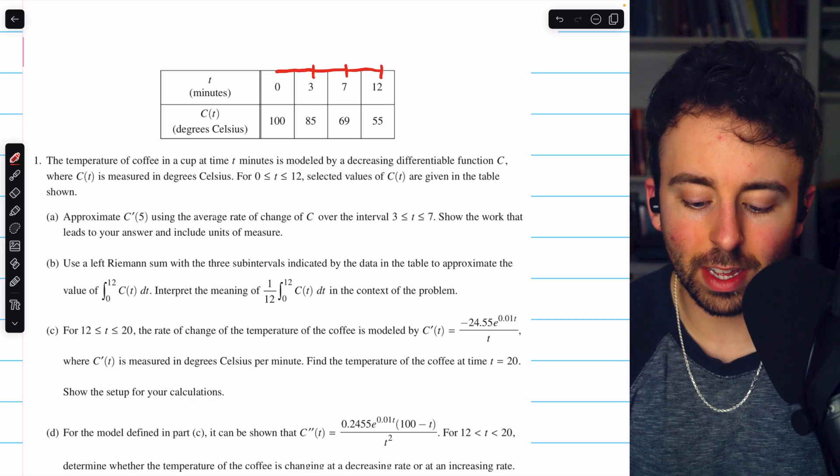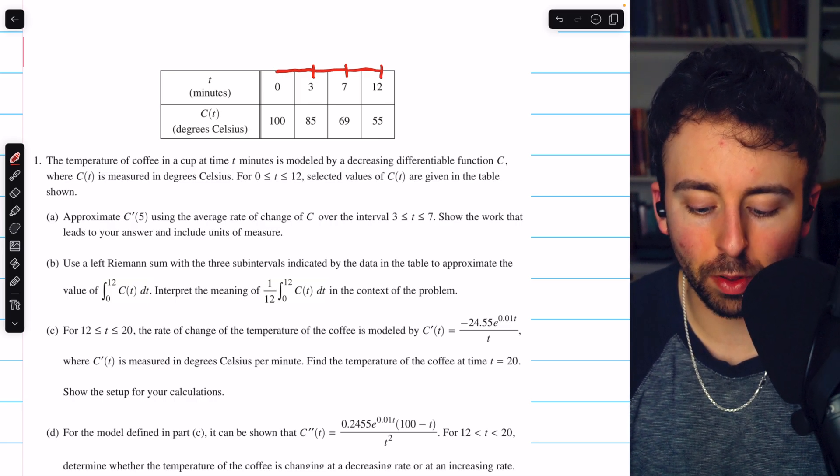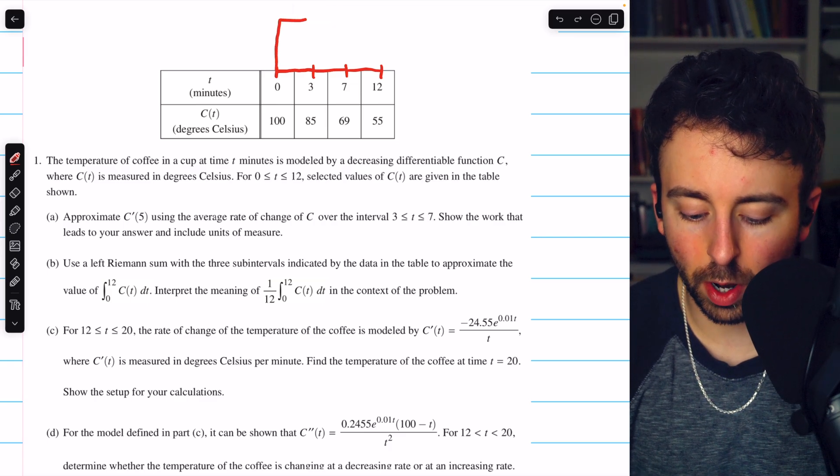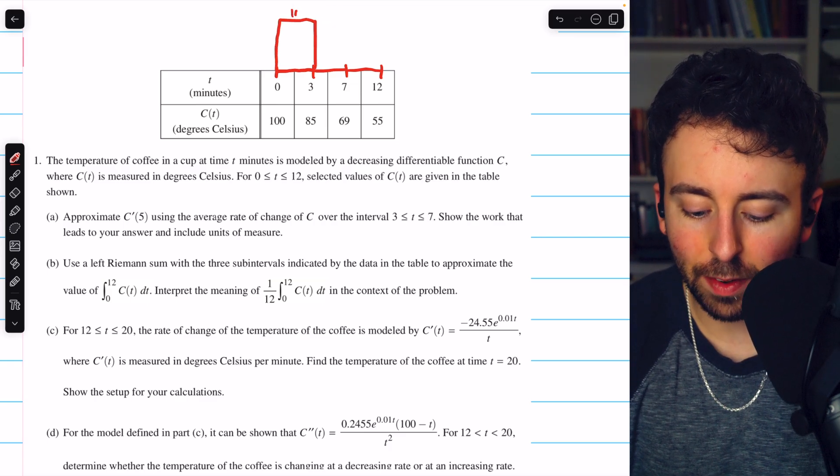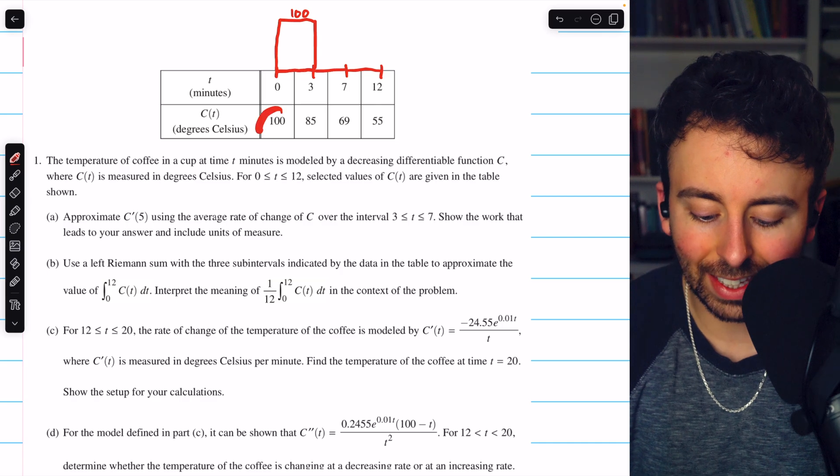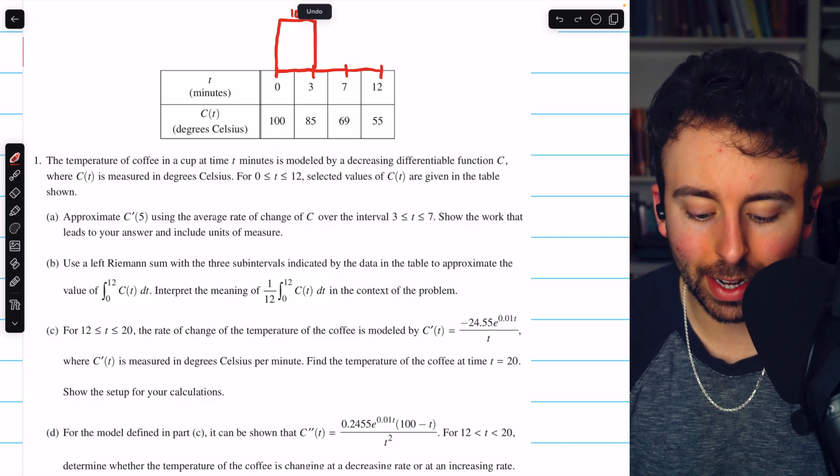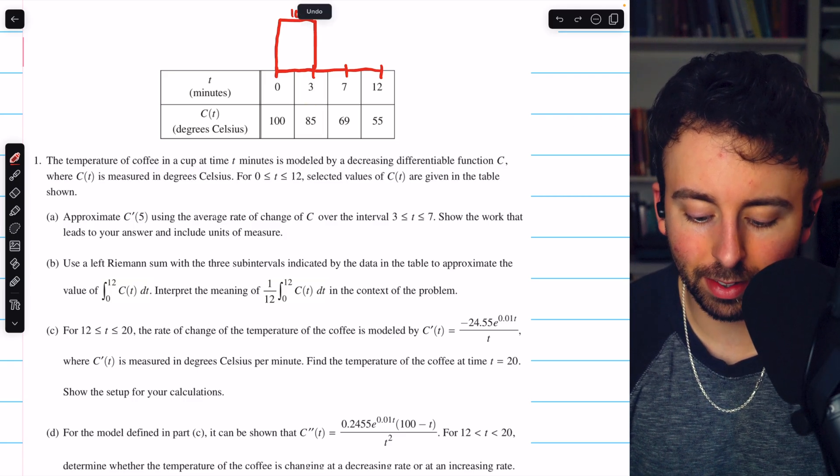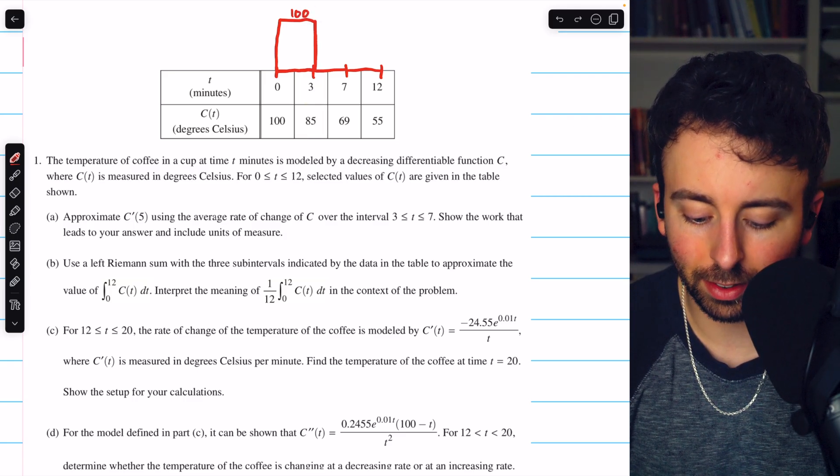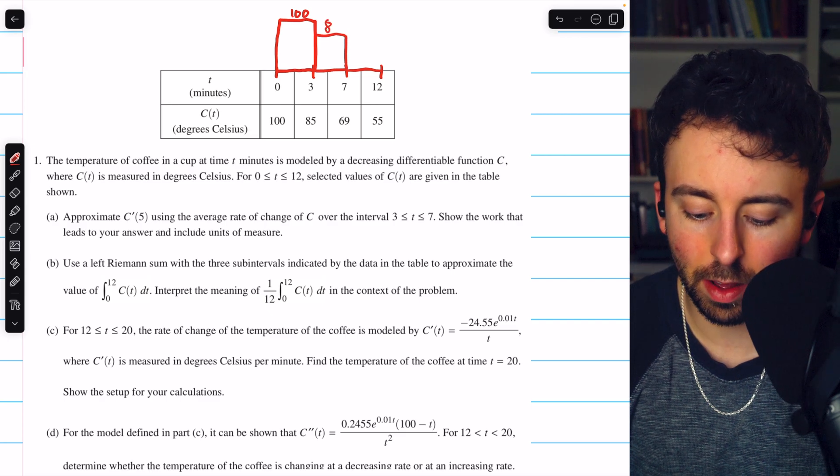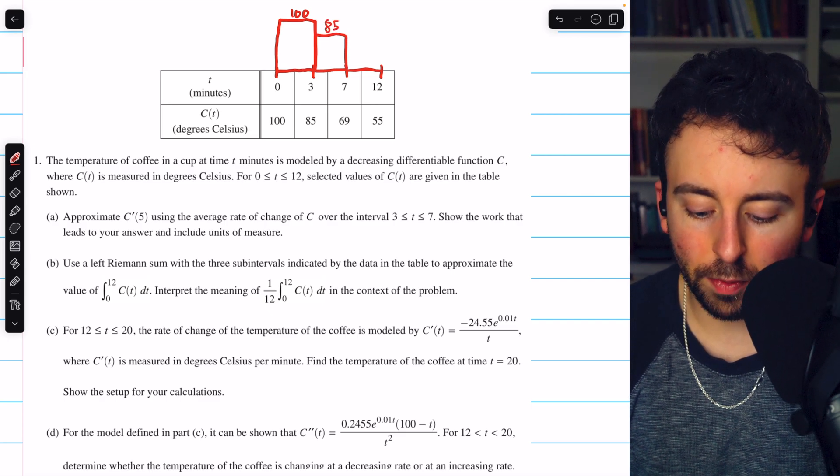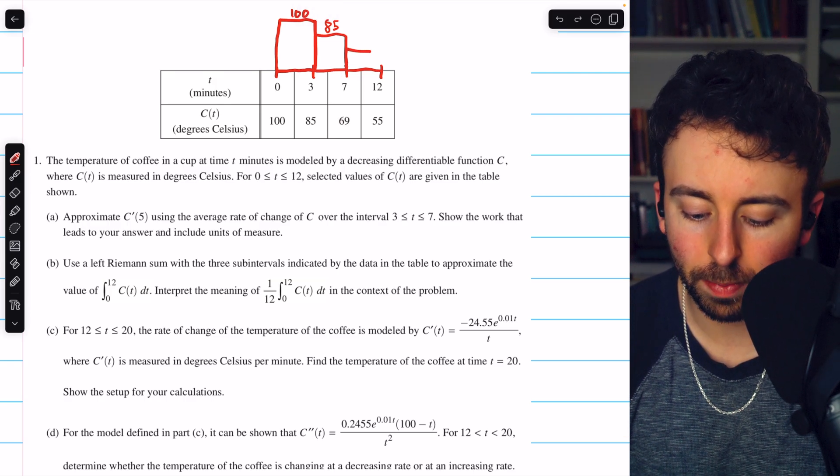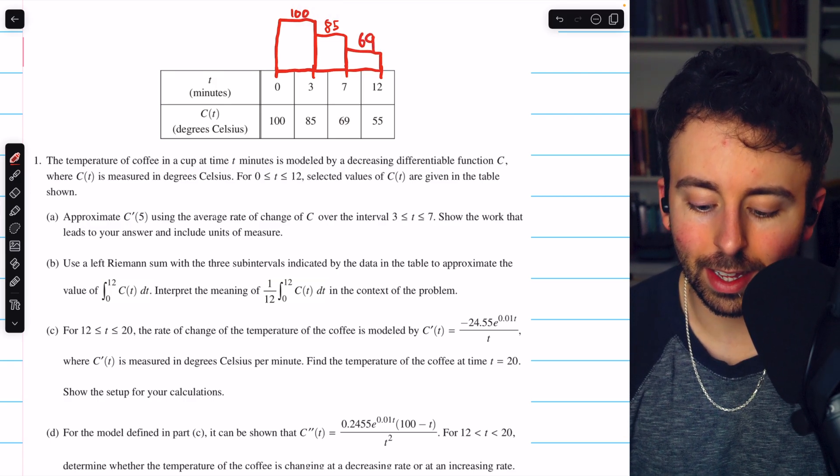Now let's just sketch these rectangles that are making up the Riemann sum. This rectangle from 0 to 3 is going to have a height of 100, because this is a left Riemann sum. So we use the left endpoint to determine the height of the rectangle. The next rectangle has a height of 85, because that's the left endpoint. So maybe that looks something like this. That has a height of 85. And then the final rectangle has a height of 69, because that's the left endpoint at t equals 7. So maybe that looks something like this.